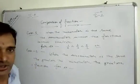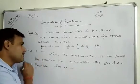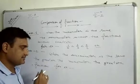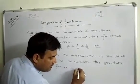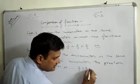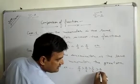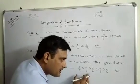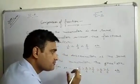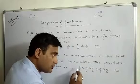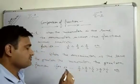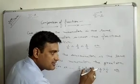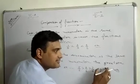Case 2: when the denominator is the same, the greater the numerator, the greater the fraction. For example, 5 upon 6 is greater than 4 upon 6, which is greater than 3 upon 6, which is greater than 2 upon 6, which is greater than 1 upon 6. Here you see that in all fractions the denominator is 6, and as the numerator increases, the fraction becomes greater. So 5 by 6 is greater than 4 by 6, which is greater than 3 by 6, which is greater than 2 by 6, which is greater than 1 by 6.